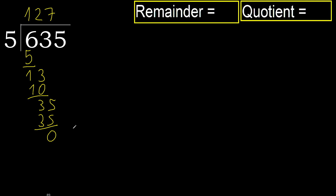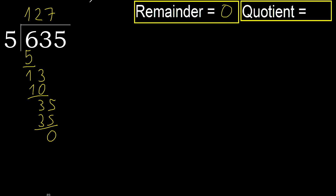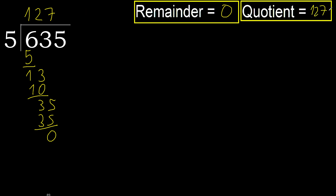That is not a number, therefore finish it. 635 divided by 5 is here — the answer is 127.